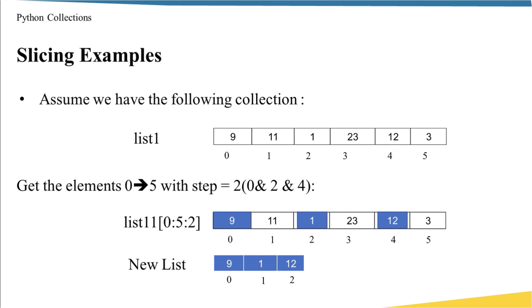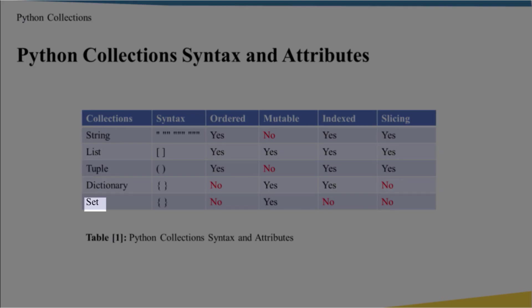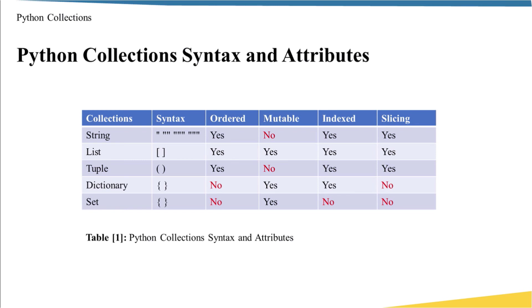Before I end this lecture, I want to show you a summary table. This table summarizes all the details about all the collections in Python: string, list, tuple, dictionary, and set. As you see, I use quotes to define a string, square brackets for a list, parentheses for a tuple, and curly braces for a dictionary and set. The table shows which collections are ordered, mutable, indexed, and support slicing. Don't worry if this feels overwhelming — in the next lectures we will go through each row in detail. For example, if you want an ordered collection use a list; if you want a read-only collection, use a tuple because it is immutable.